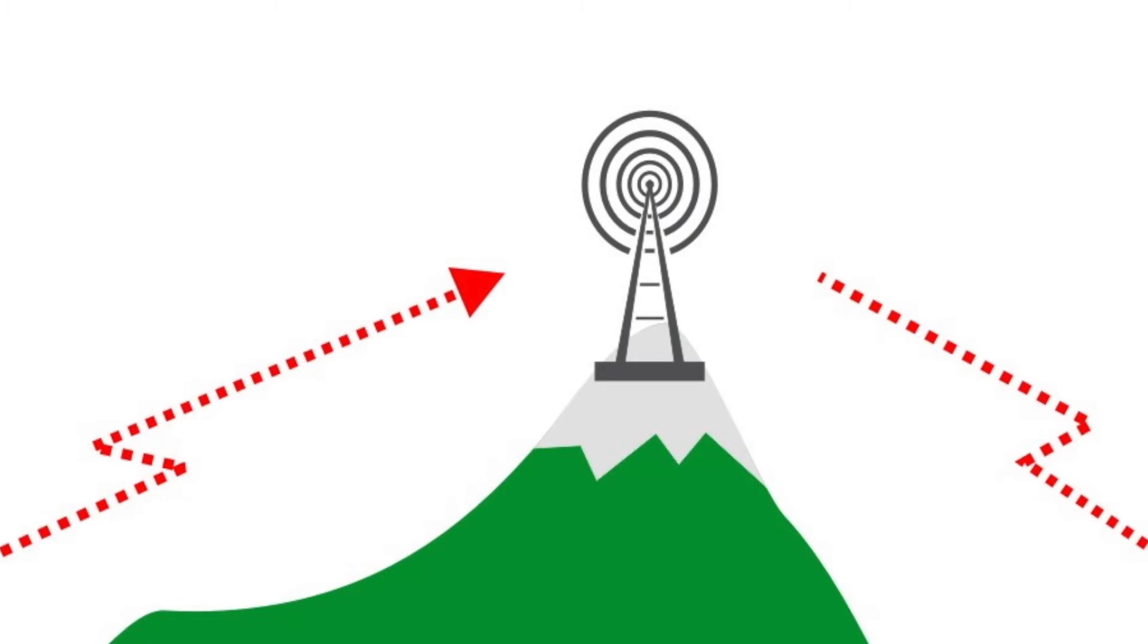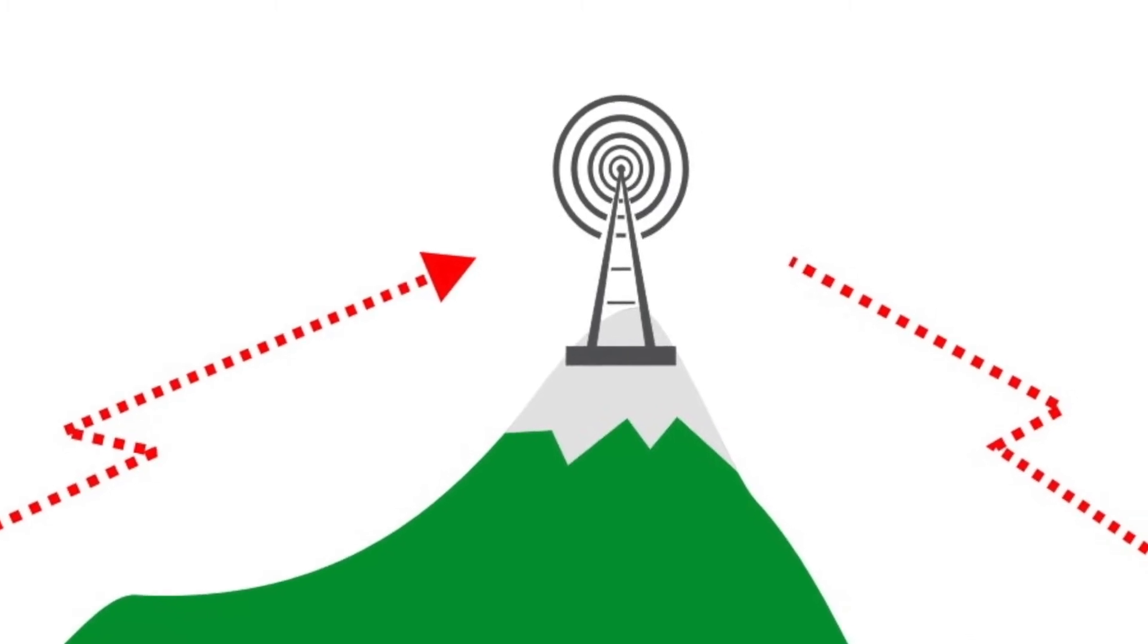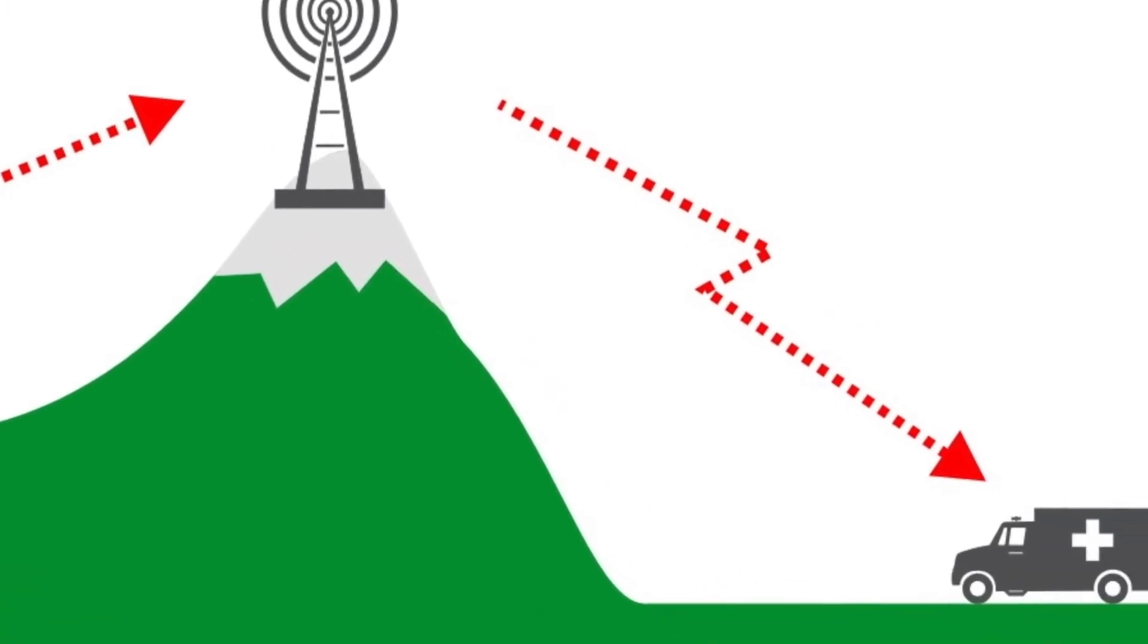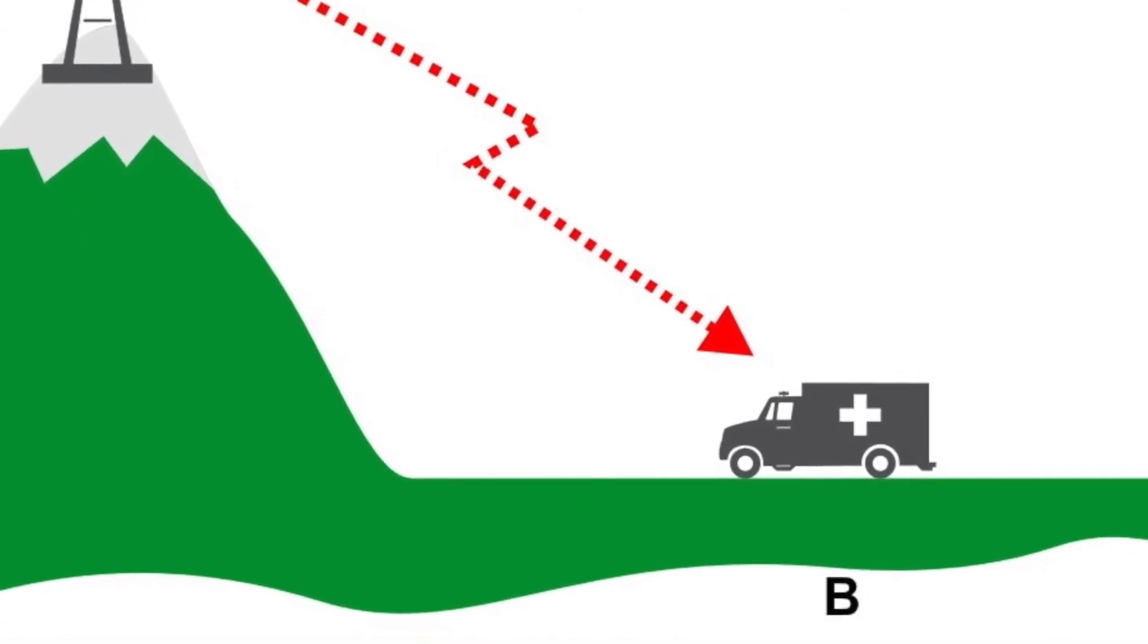And then the repeater retransmits that same message down to the guy on the other side of the mountain with his handheld radio.